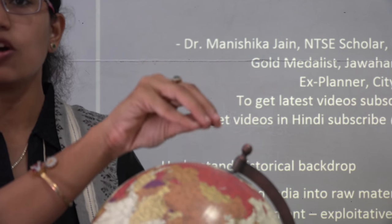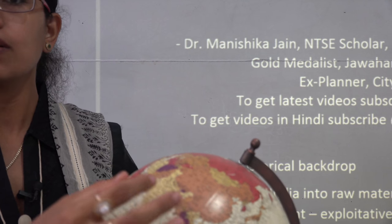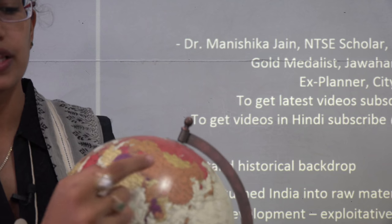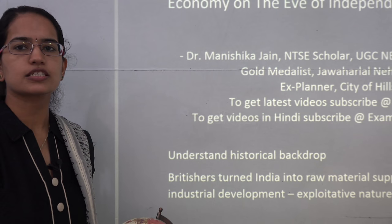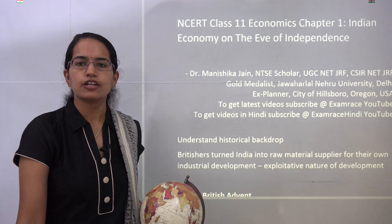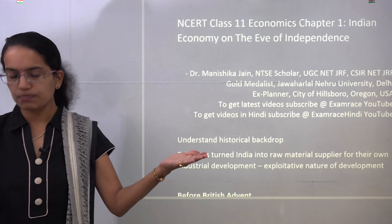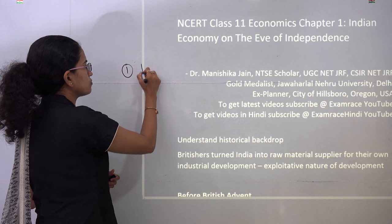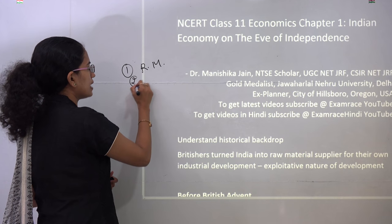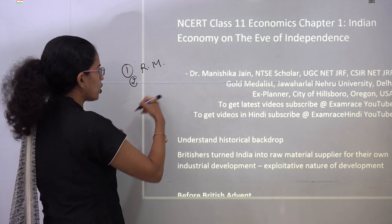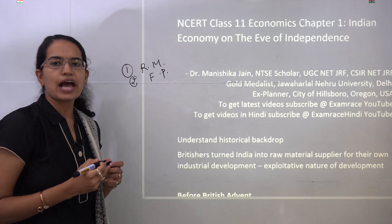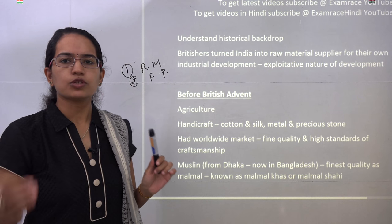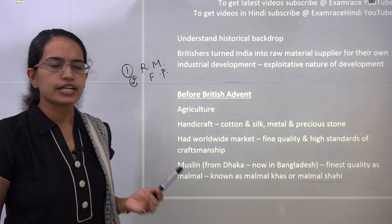Since India was exhausted of all its raw material, it was not able to meet local needs. Finished products were sent from European nations back to India. Ultimately India merely became a supplier of cheap raw material and an importer of finished products — a major exploitation of Indian resources that took place during the British period.